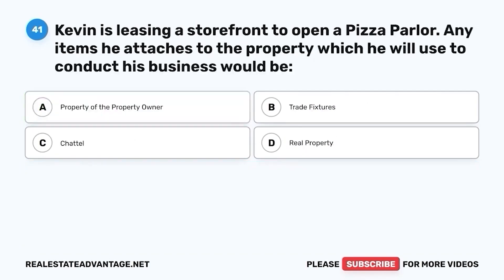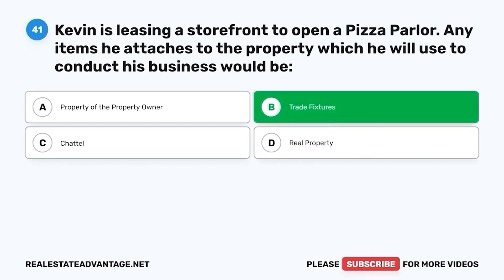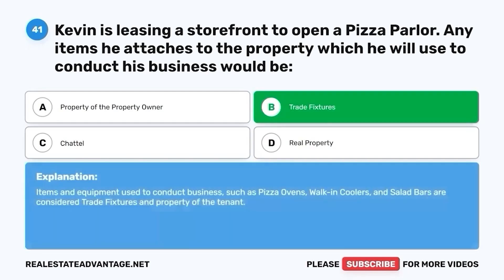Question 41. Kevin is leasing a storefront to open a pizza parlor. Any items he attaches to the property which he will use to conduct his business would be: A. Property of the property owner. B. Trade fixtures. C. Chattel. D. Real property. The correct answer is B. Trade fixtures. Items and equipment used to conduct business, such as pizza ovens, walk-in coolers, and salad bars, are considered trade fixtures and property of the tenant.